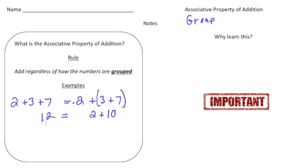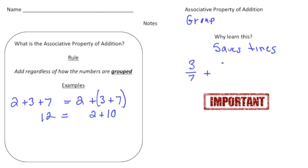So really, why learn this? This is going to be really helpful later on when you learn about algebra. But one big reason is it saves time — it takes problems that are kind of complex and can make them a lot easier. Here's an example: let's say we have three-sevenths plus three-fourths plus one-fourth.